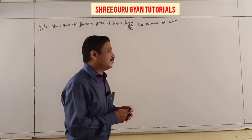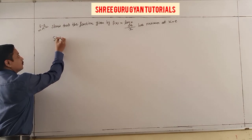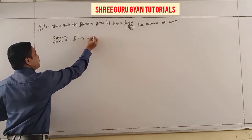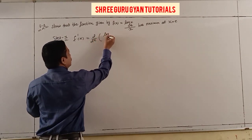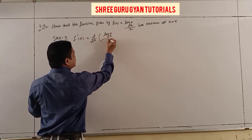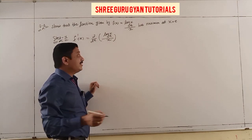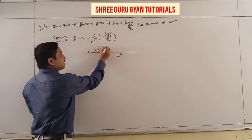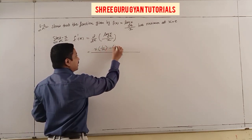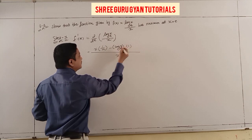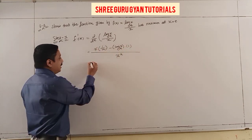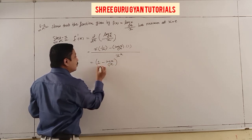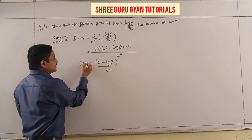Applying Step 1: find f'(x) = d/dx of (log x / x). Using the quotient rule — denominator squared: (x · (1/x) - log x · 1) / x² = (1 - log x) / x². That's your f'(x).